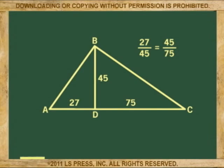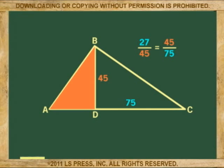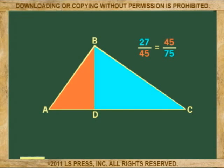Let's review the geometric mean. The altitude of a right triangle is the geometric mean of the proportion that defines the other sides of the three triangles formed.